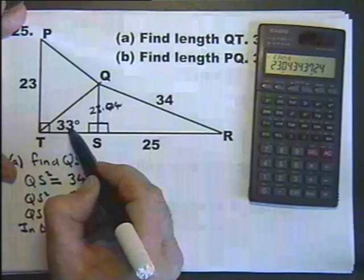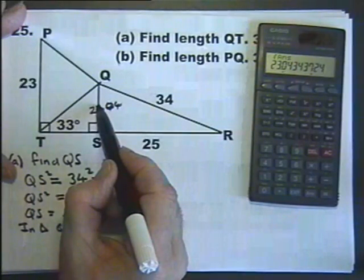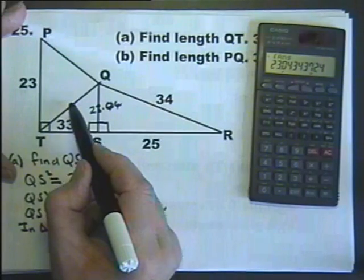In this triangle, if I'm using this angle here, that's the opposite, and that's the hypotenuse, and that's the adjacent.